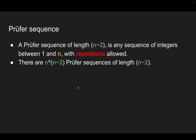There are n raised to the power of n minus 2 Prüfer sequences of length n minus 2. The reason is that there are n minus 2 elements that we need to determine, and for each element in the sequence we have n choices. So there are totally n raised to the power of n minus 2 Prüfer sequences of length n minus 2.